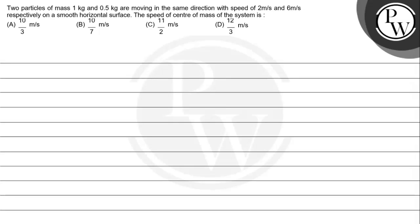Hello. The question says that two particles of mass 1 kg and 0.5 kg are moving in the same direction with speeds of 2 m/s and 6 m/s respectively on a smooth horizontal surface. The speed of center of mass of the system is: (A) 10/3 m/s, (B) 10/7 m/s, (C) 11/2 m/s, (D) 12/3 m/s.